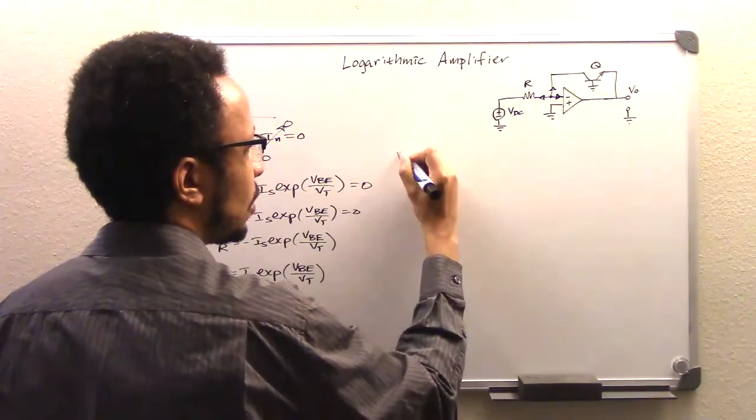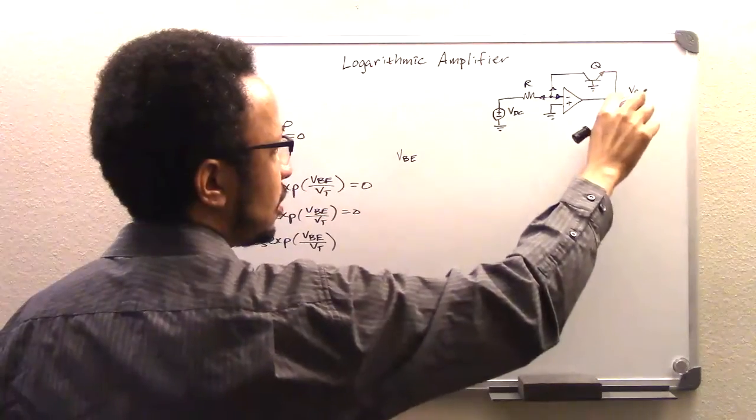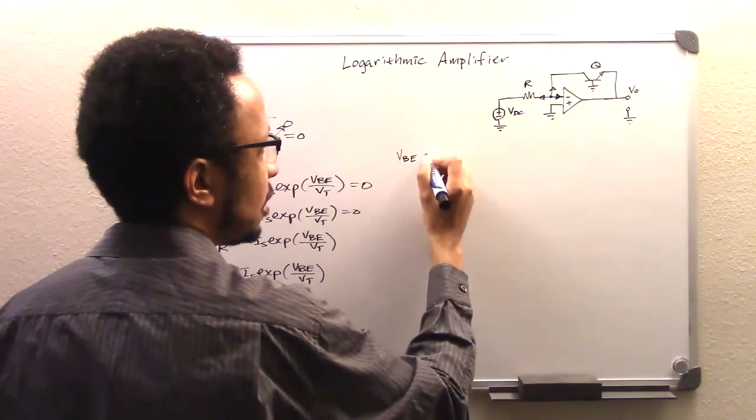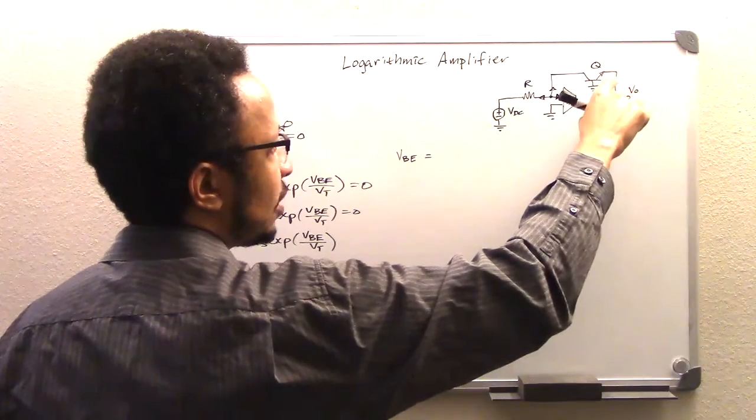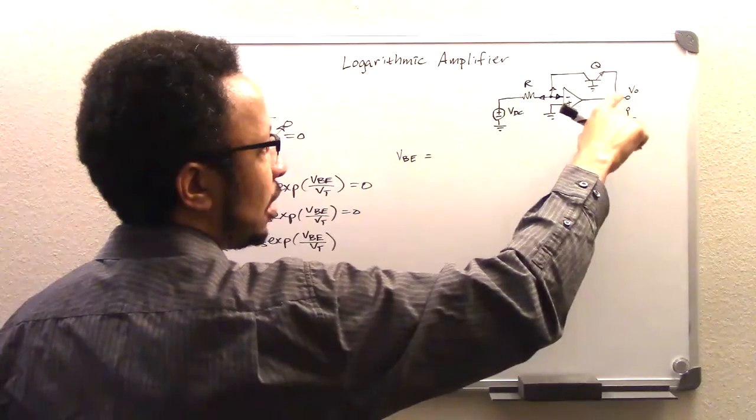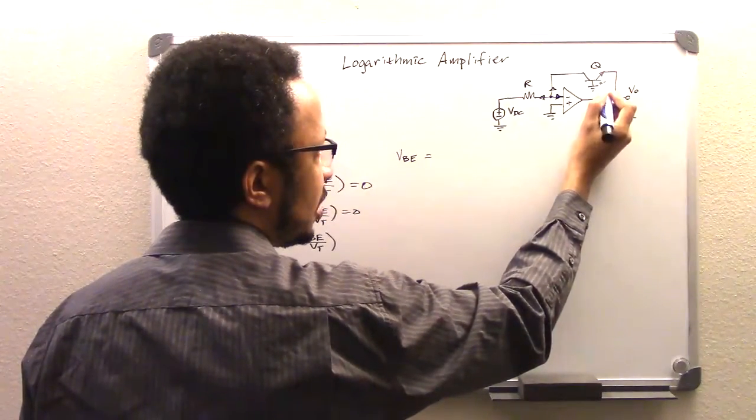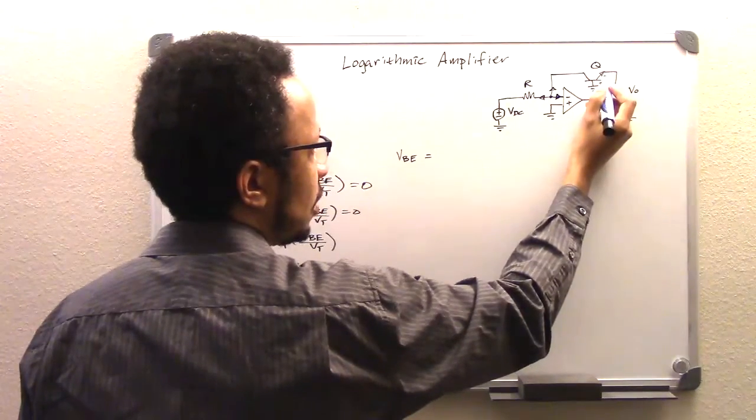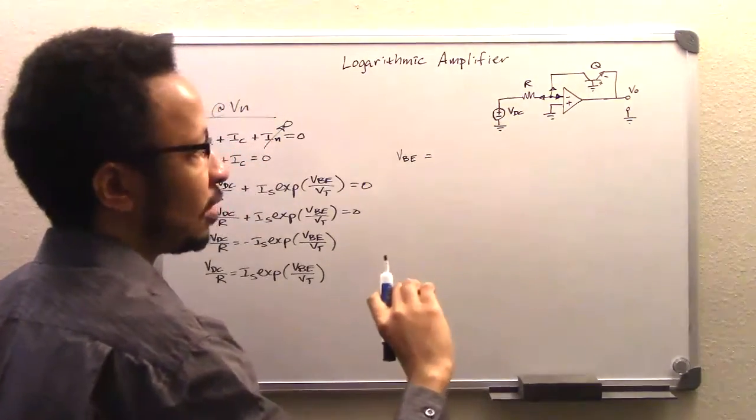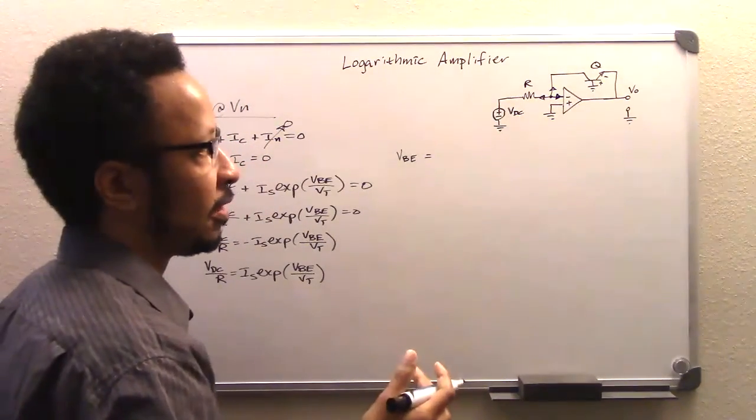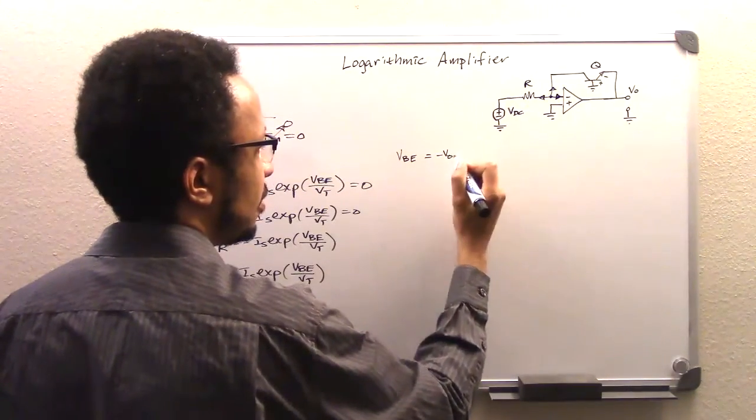So we're going to see here that VBE, the bottom of VBE is going to be at Vout here. And the top of it, if we are referencing VBE as being from here to there, it's going to be Vout, but it's going to be Vout flipped upside down. So it's going to be equal to negative Vout.